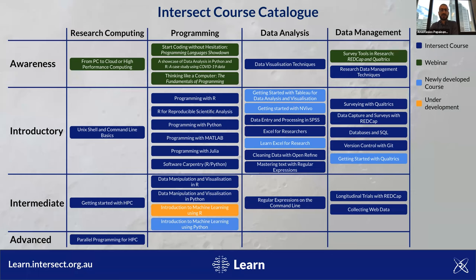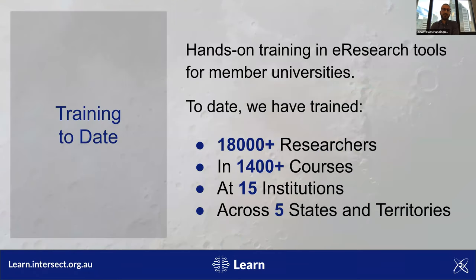Here is our up-to-date course catalog. This year we invested time to create awareness-level webinars, with different categories and levels. We have four categories: research computing, programming, data analysis — including SPSS, Tableau, NVivo, and Excel — and data management covering REDCap, Qualtrics, survey tools, Git, and others. Since 2013 we have trained more than 18,000 researchers and delivered more than 1,400 courses at 15 institutions across five states and territories.